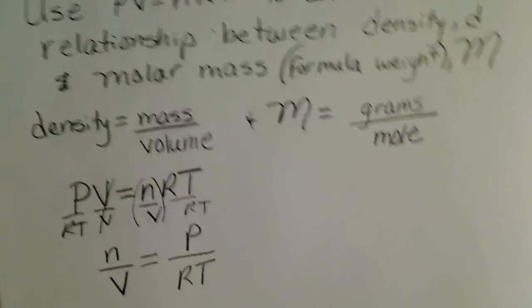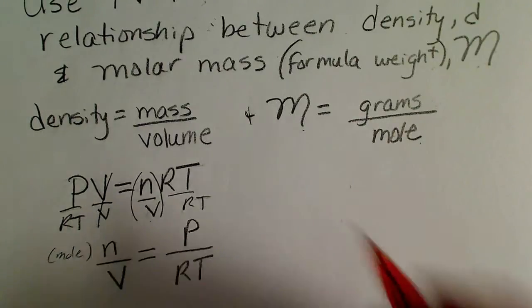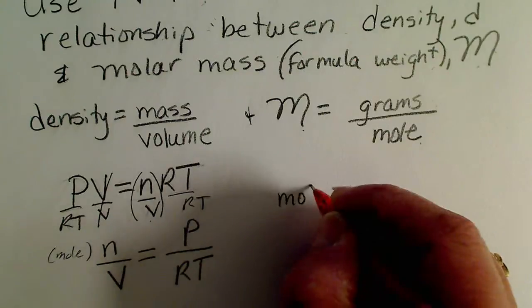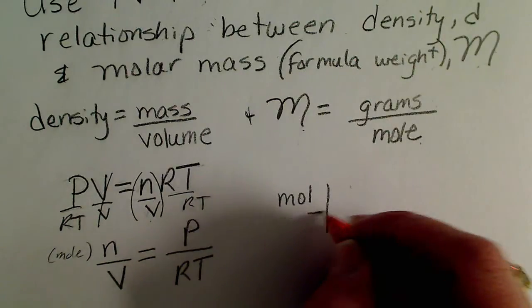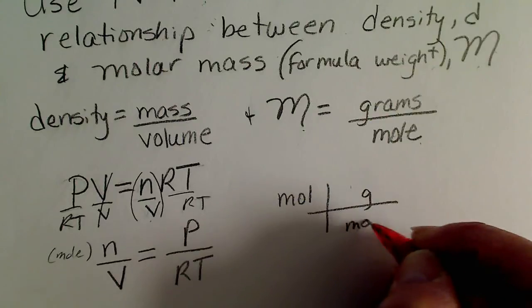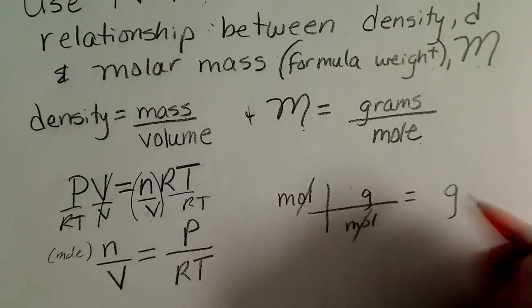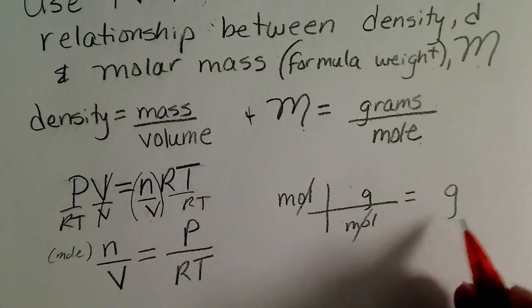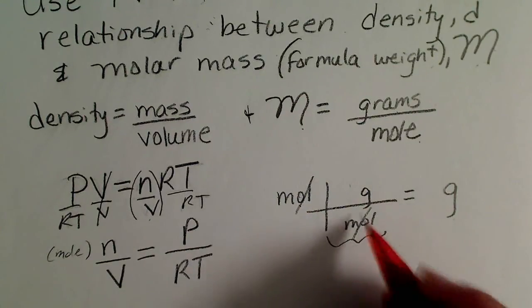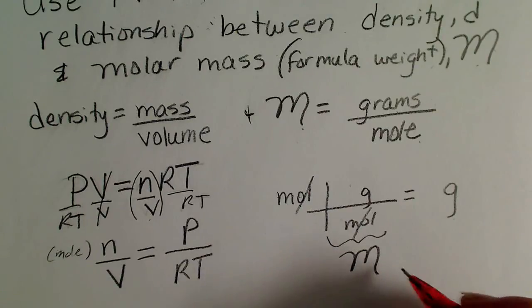And then if we remember, if we have moles, that's what n stands for. If we have moles, we can always multiply by the molar mass, which is grams per mole, and that will get us from moles to grams. So multiplying by the molar mass is the same as multiplying both sides by capital M.